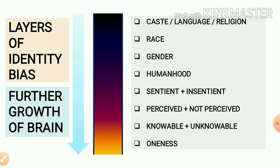Gradually, in the eyes of our understanding, we begin to see that caste, language, and religion kind of aspects bear very small roles and are detrimental at times. So gradually, caste, religion, and language — these factors lose importance in our brain and we don't look at these things as very big aspects of our life.